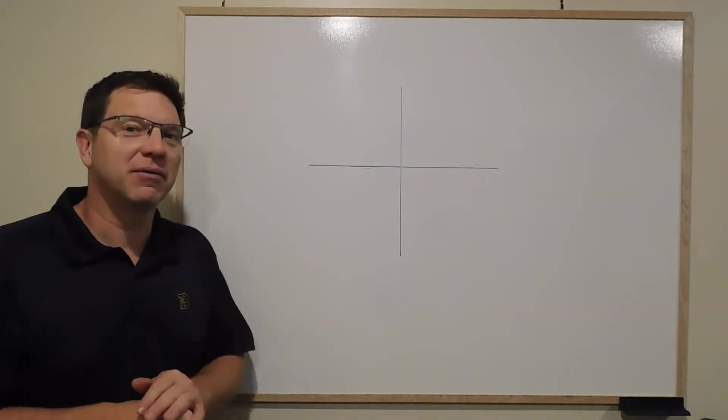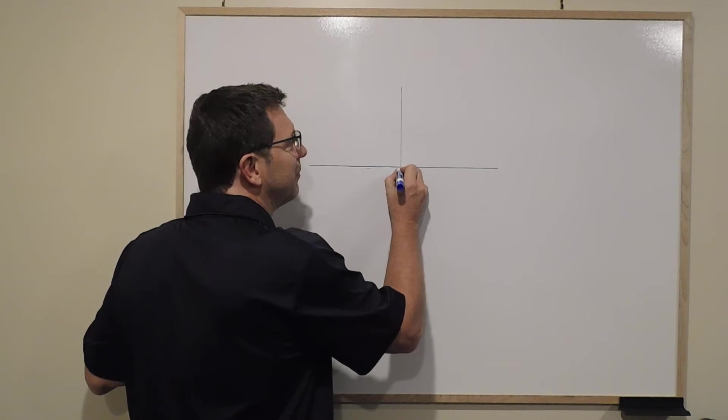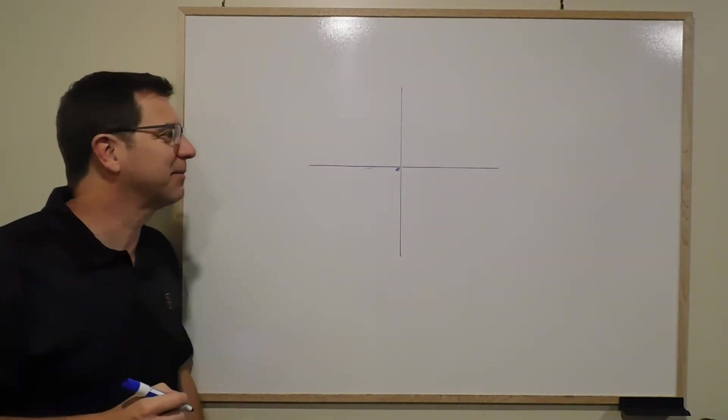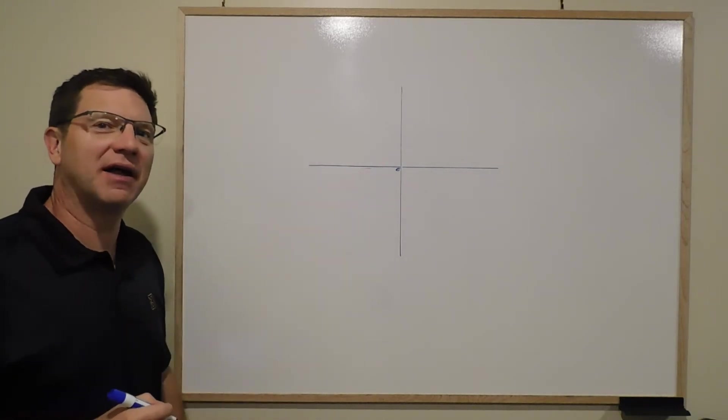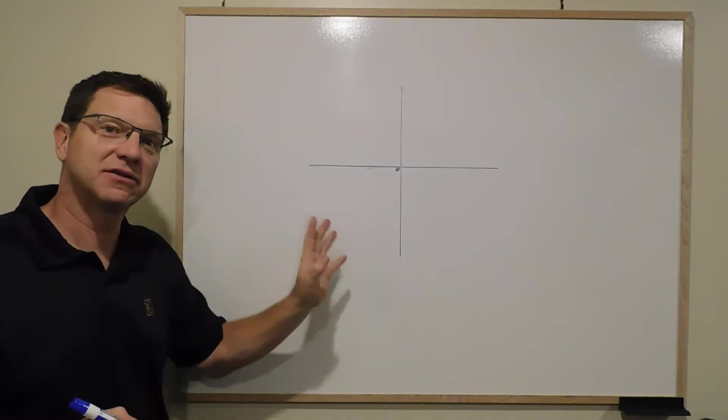Some things I want you to understand about graphing: this is the origin and it's labeled with a zero in that corner. Whenever you're doing a graph by hand, it'll be labeled in that part of the origin. That's where the x-axis and y-axis cross.